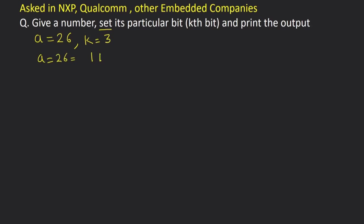26 can be written in bits as 1 1 0 1 0. With k equal to 3, we consider this as the first bit, second bit, third bit, and so on. The third bit here is 0, and we want this bit to be set — that means convert it to 1 — while all the remaining bits should be copied as-is in the output.